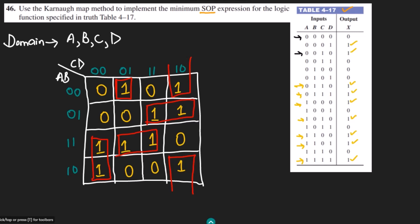Now writing the combinations for each group. For the first group, in the column CD = 10 is common, so CD' is common. Between the two cells, B = 0 is common, so I write B complement. This gives B'CD'. For the second group, AB = 01 is constant in that row, so I write A'B. For the third group, CD = 11 is constant, giving C as a term.